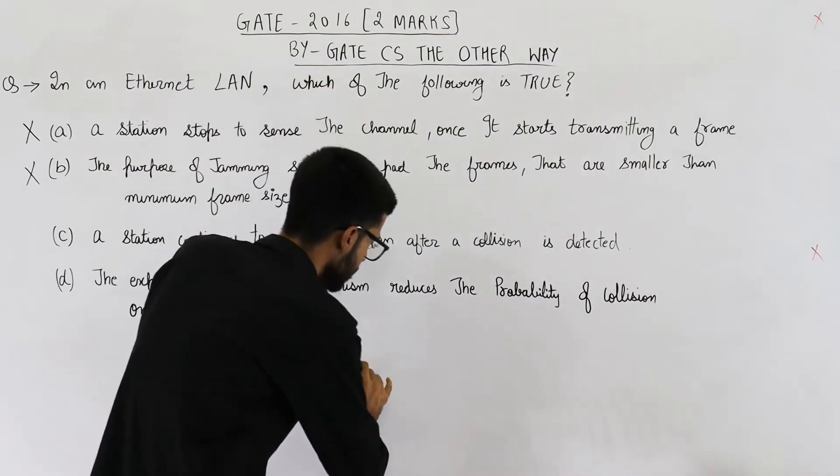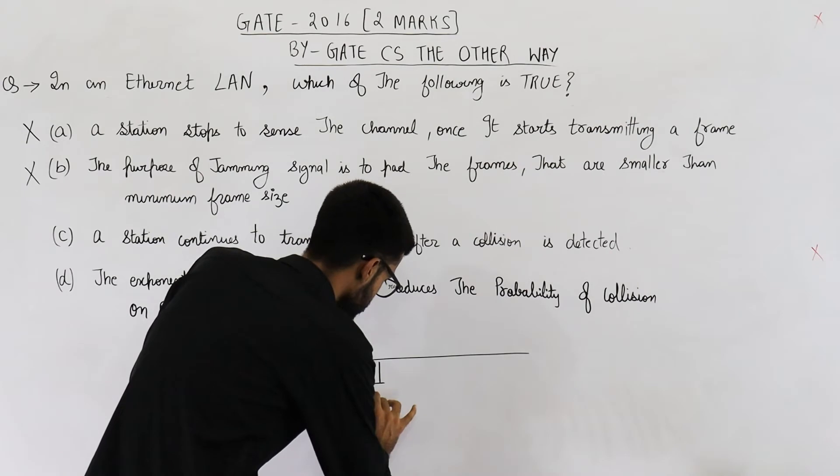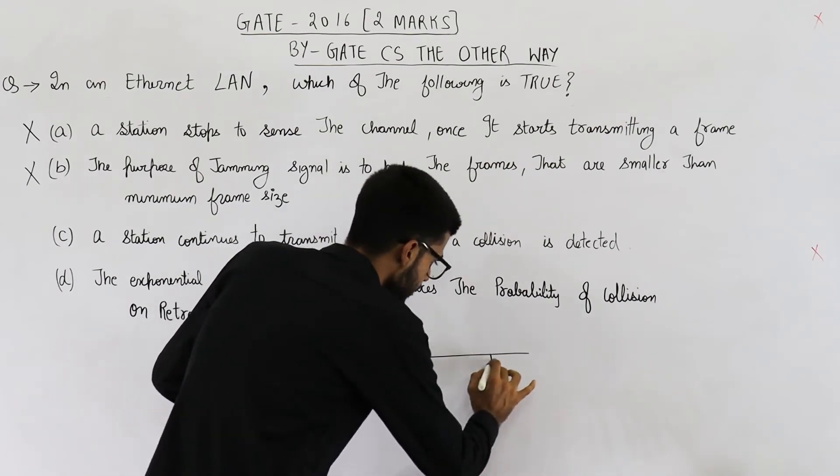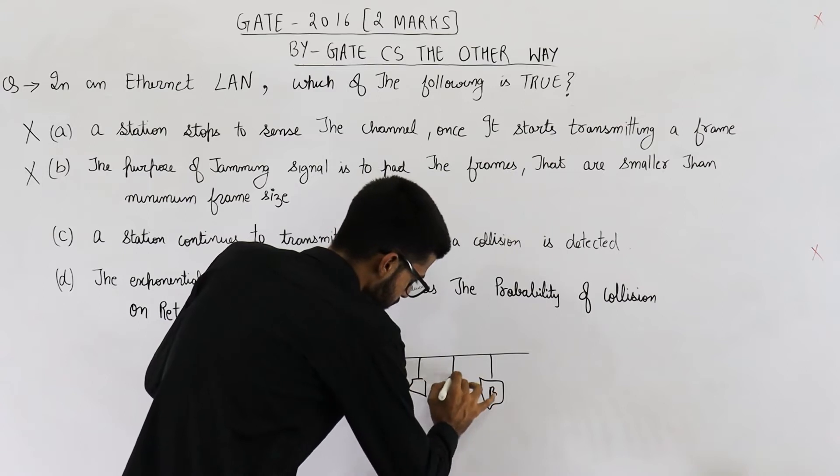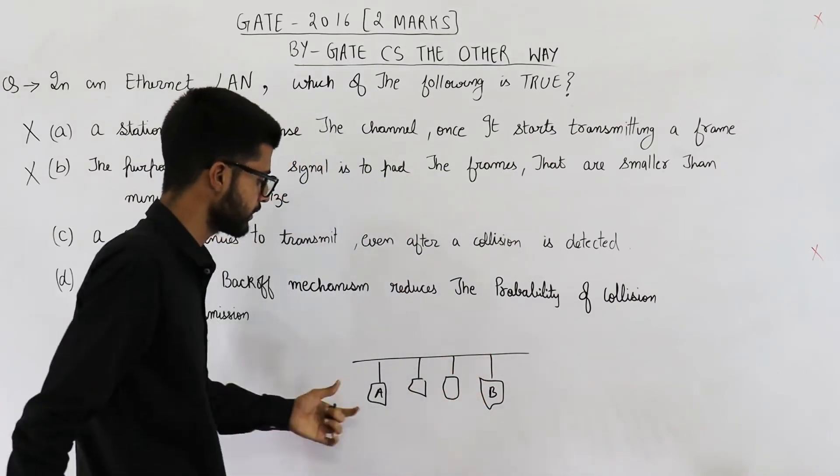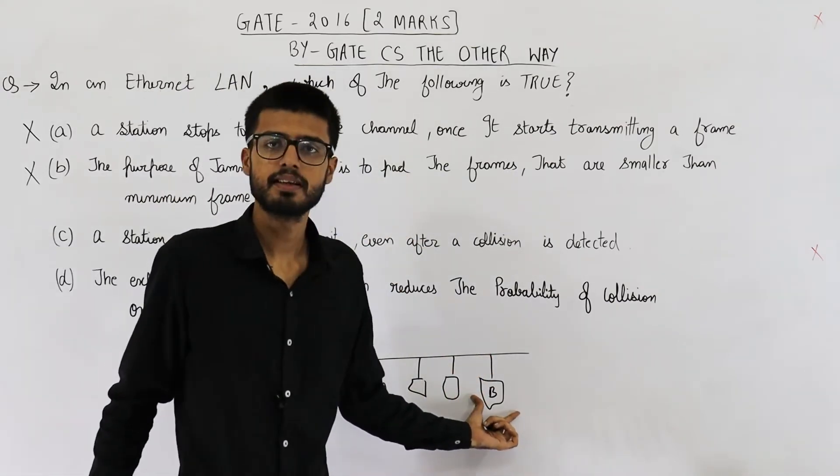Suppose this is station A. This is station A. A is sending data to B. There are many other stations also. But this one is the sender and this one is the receiver.